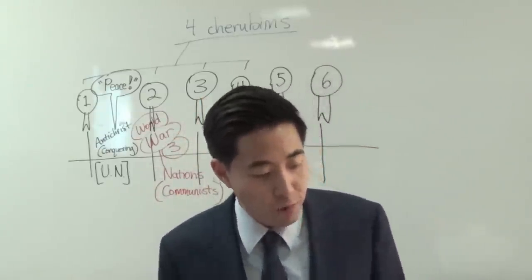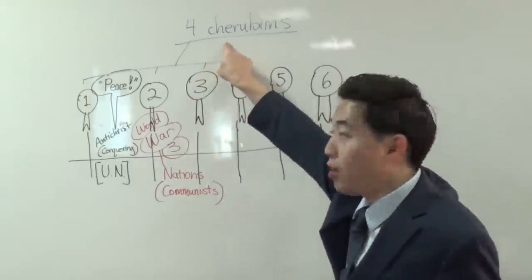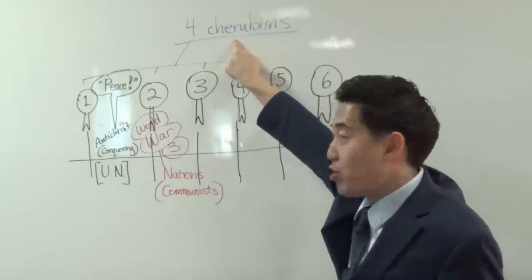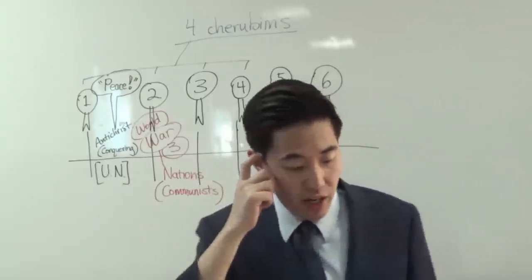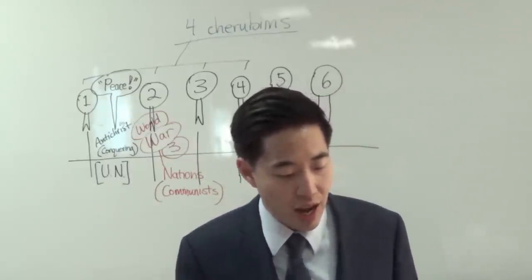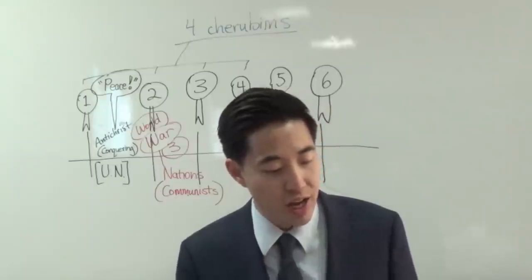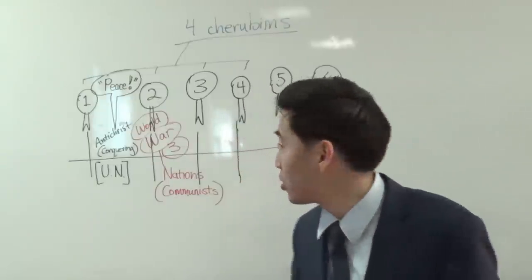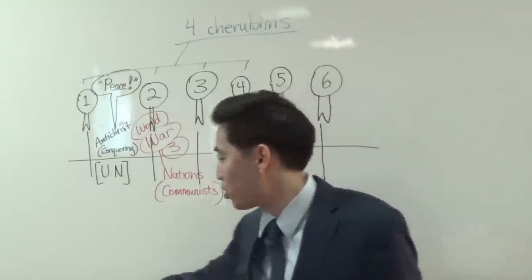I heard the third beast say, so the third one of the four cherubims, the third one is introducing the third horseman right here. Come and see, so come and take a look. And I beheld, so John looked, and lo, a black horse. So now comes out a black horse.